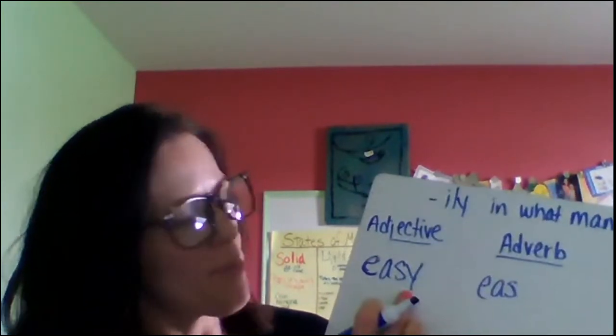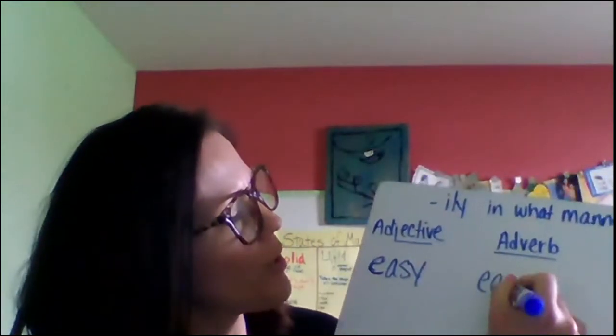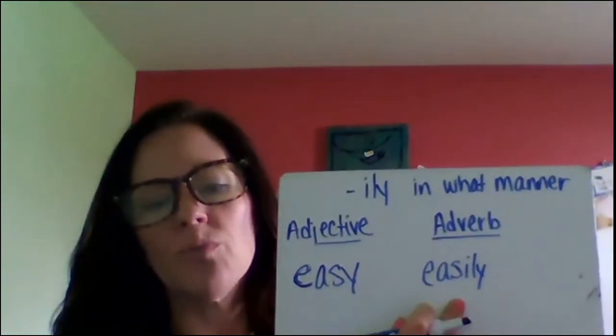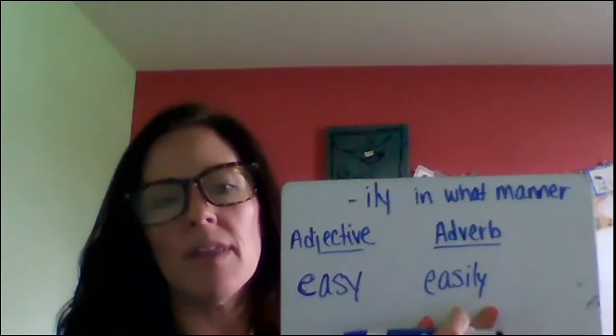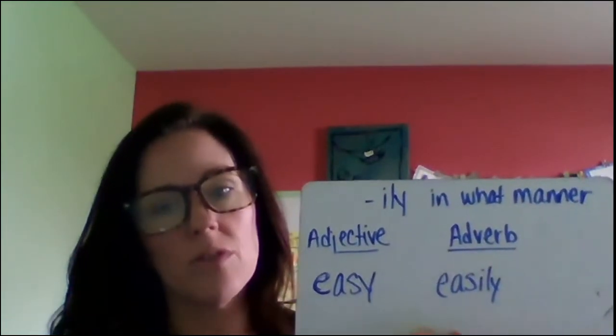So to do that, I'm going to drop the Y. Remember, if there's a Y there, say bye-bye Y, and you're going to add an I-L-Y: easily. I can read it easily. The adverb easily is describing the verb to read.